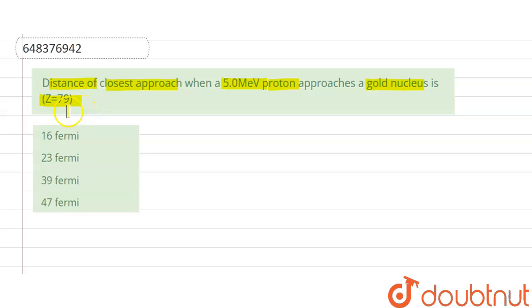We have given atomic number of gold nucleus that is 79. We have to find out the distance of closest approach when a 5 MeV proton approaches the gold nucleus.